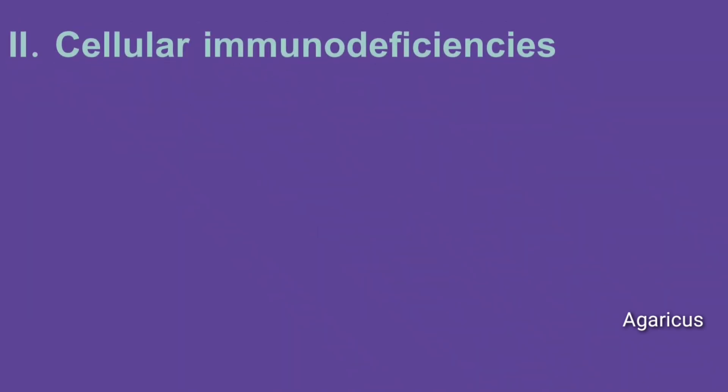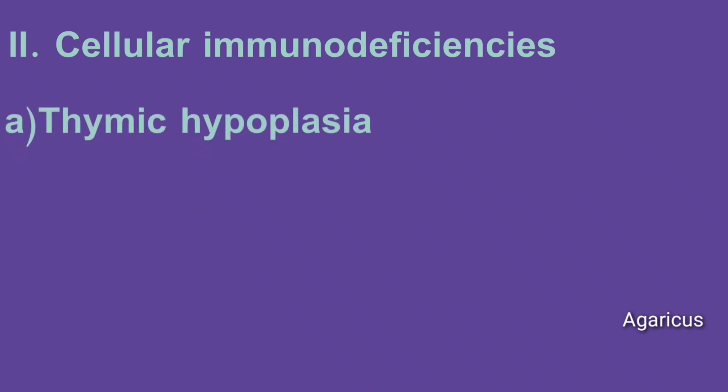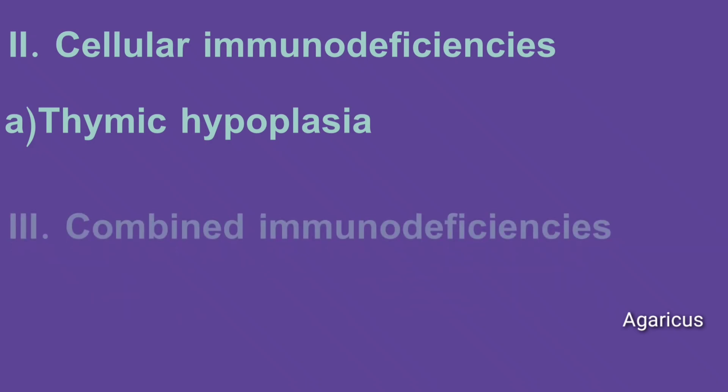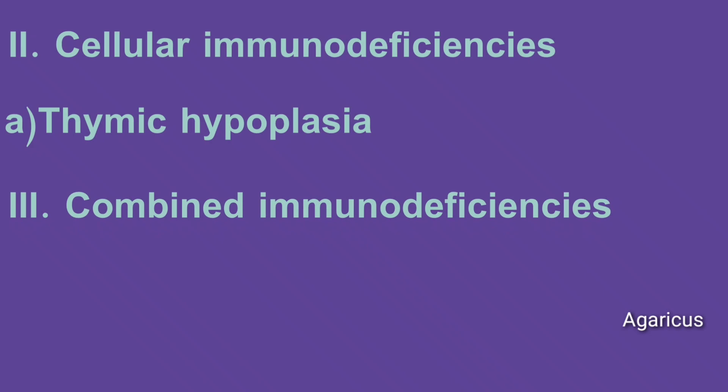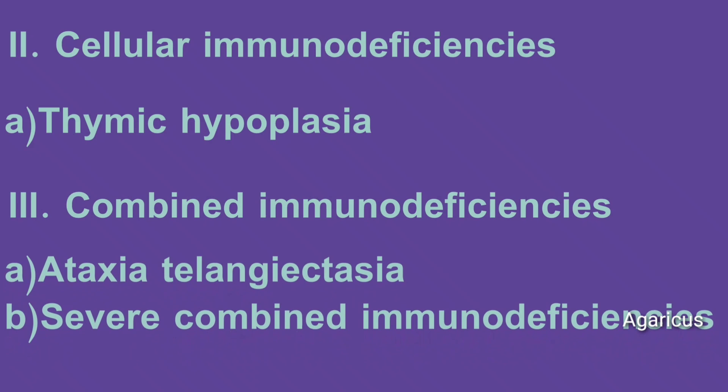Cellular immunodeficiencies include thymic hypoplasia as an example. Combined immunodeficiencies include ataxia-telangiectasia and severe combined immunodeficiency (SCID) as examples.